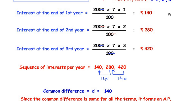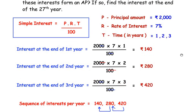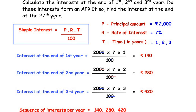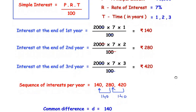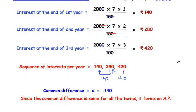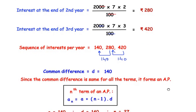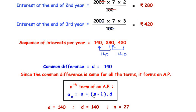Now we have to find the interest at the end of the 27th year. We will use the nth term formula for an AP: aₙ = a + (n − 1) × d, where a is the first term and d is the common difference. In our sequence, the first term a = 140, the common difference d = 140, and since we need the 27th year, n = 27.